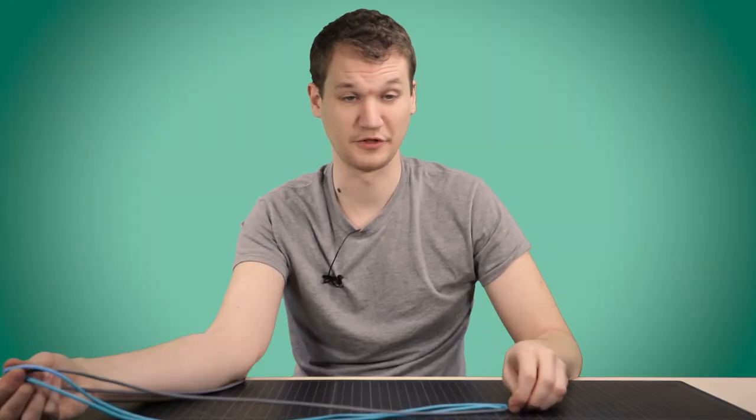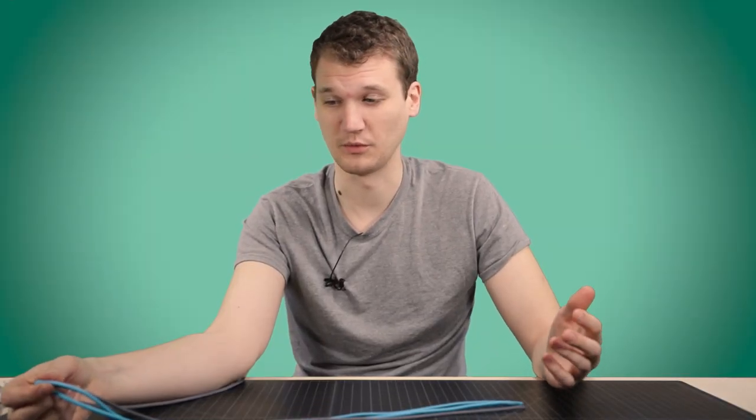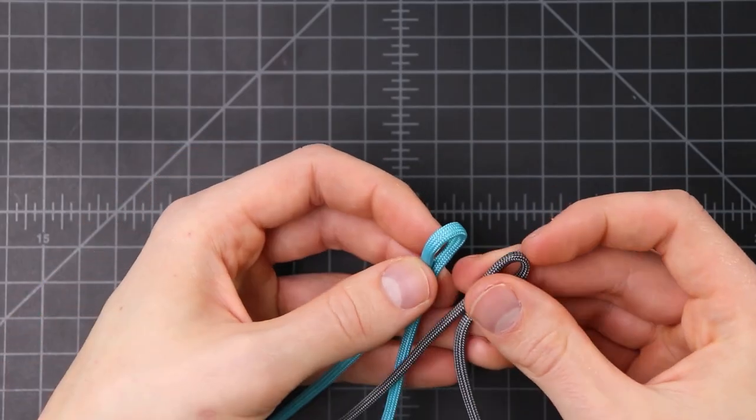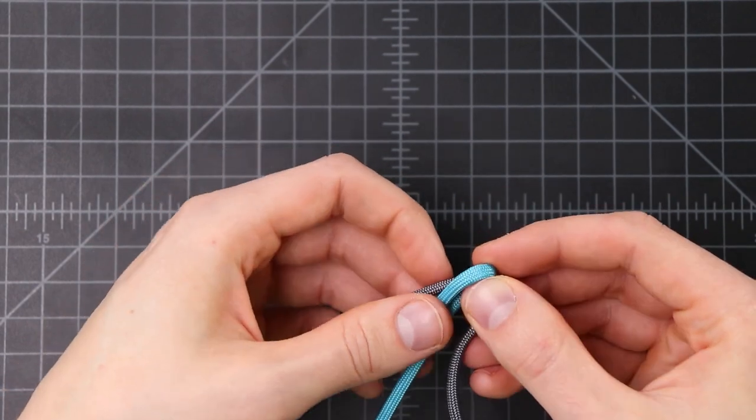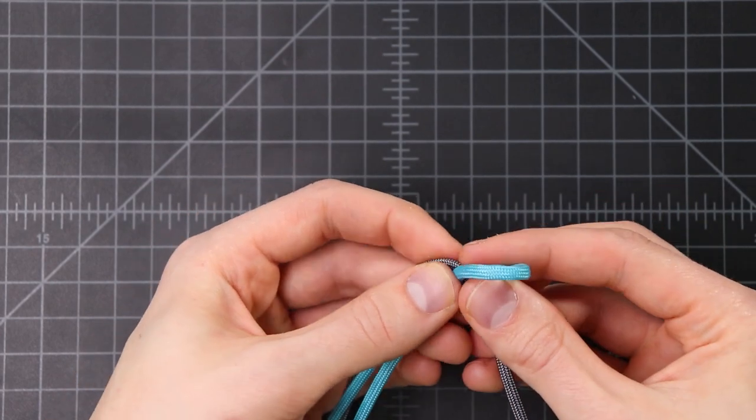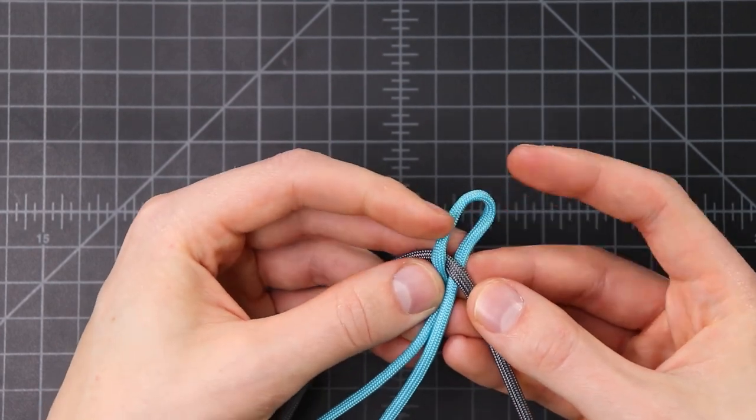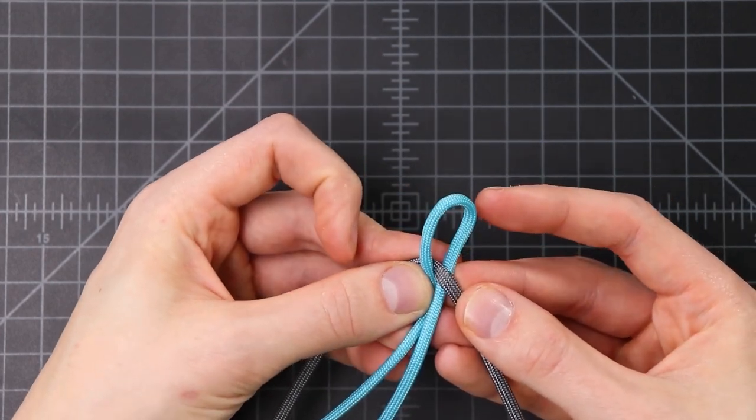Those are going to become our core strands. This is a 3 strand bracelet, so a little bit different than what we're used to. Once we've lined up all of our ends, we want to put our longer cord through the middle of that shorter cord and leave a small loop like that, that a diamond knot will fit through in the end. That's going to be our bracelet closure.